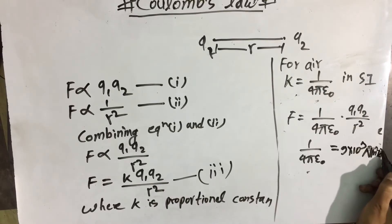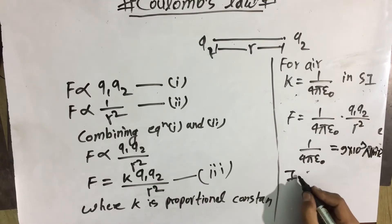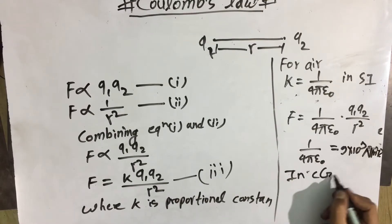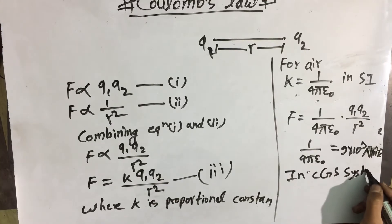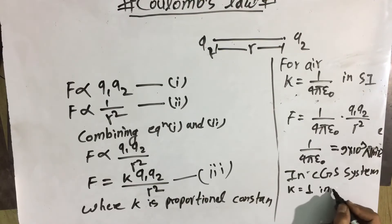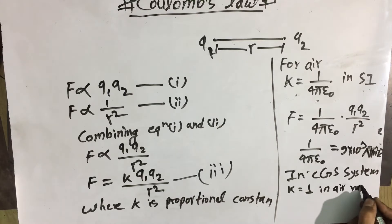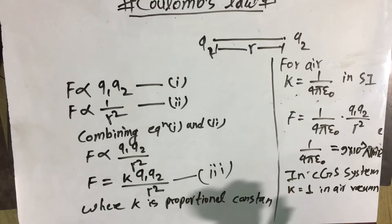In CGS system, K is equal to 1 in air or vacuum. This is equation from equation 3.